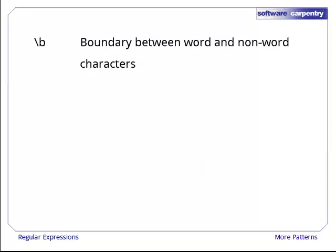A third shortcut that's often useful is backslash B, often called break. It matches the boundary between word and non-word characters. It doesn't actually match any characters, it doesn't consume any input, but it matches the transition between non-word characters and letters, digits, and the underscore.